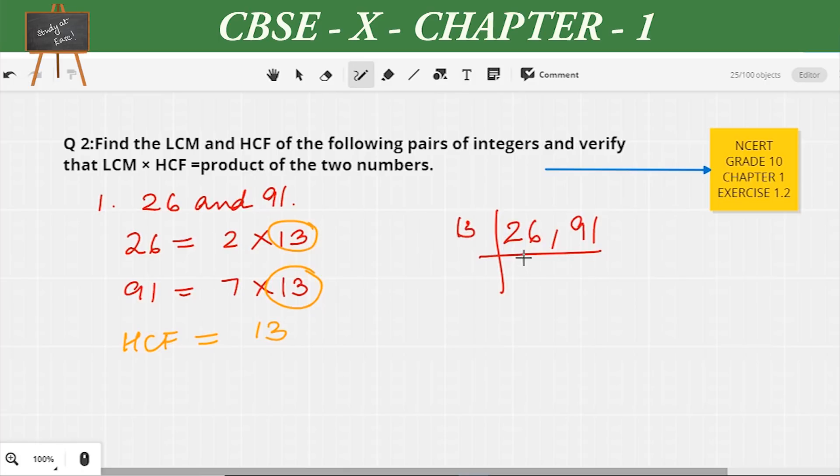Now let us find the LCM between 26 and 91. I'm going to follow the ladder method. Since 13 is common for both, I'm dividing it with 13, so it becomes 2 and 7. Now 2 and 7 does not have any common numbers between them, so I'm going to multiply. The LCM is equal to 2 × 7 × 13 which is equal to 182.